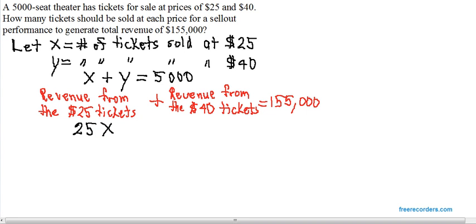That revenue is going to be 25X plus the revenue from the $40 tickets. If you sell one $40 ticket, your revenue is $40. If you sell two $40 tickets, your revenue is $80. If you sell three $40 tickets, your revenue is $120. In other words, your revenue is 40 times the number of tickets sold at $40, which is what we're calling Y. And here is your second equation.